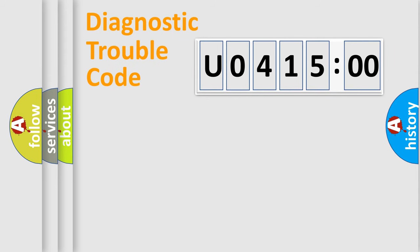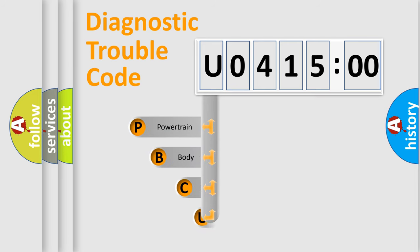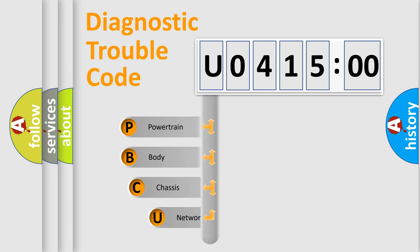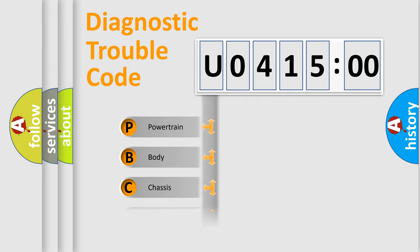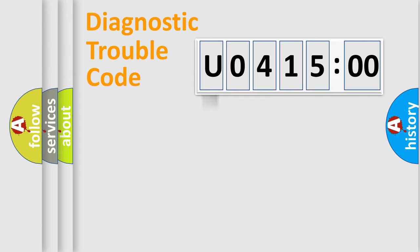First, let's look at the history of diagnostic fault code composition according to the OBD2 protocol, which is unified for all automakers since 2000. We divide the electric system of the automobile into four basic units: Powertrain, Body, Chassis, and Network.